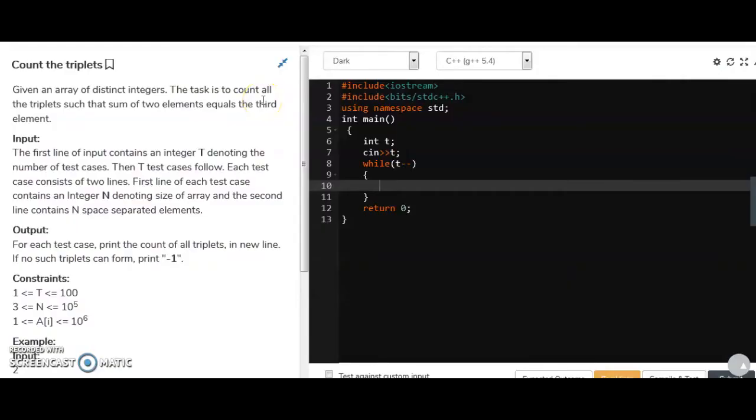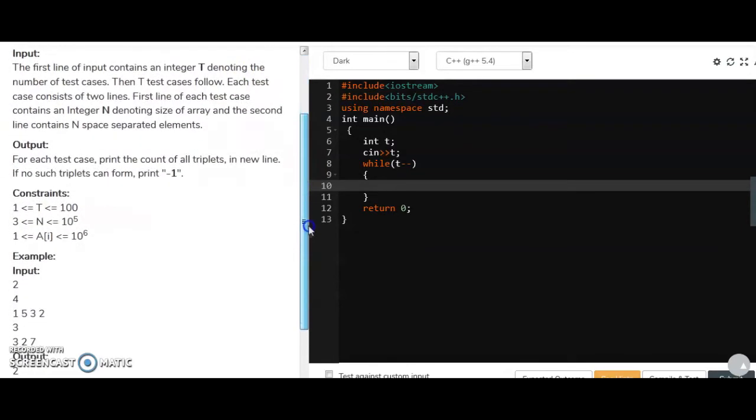How are you? I welcome you all to my YouTube channel Coding by Fun and let's get started. So today's question we have to find the count of the triplets. So what are these triplets? Let's see the definition. The task is to count all the triplets such that two elements, the sum of two elements equals to the third element.